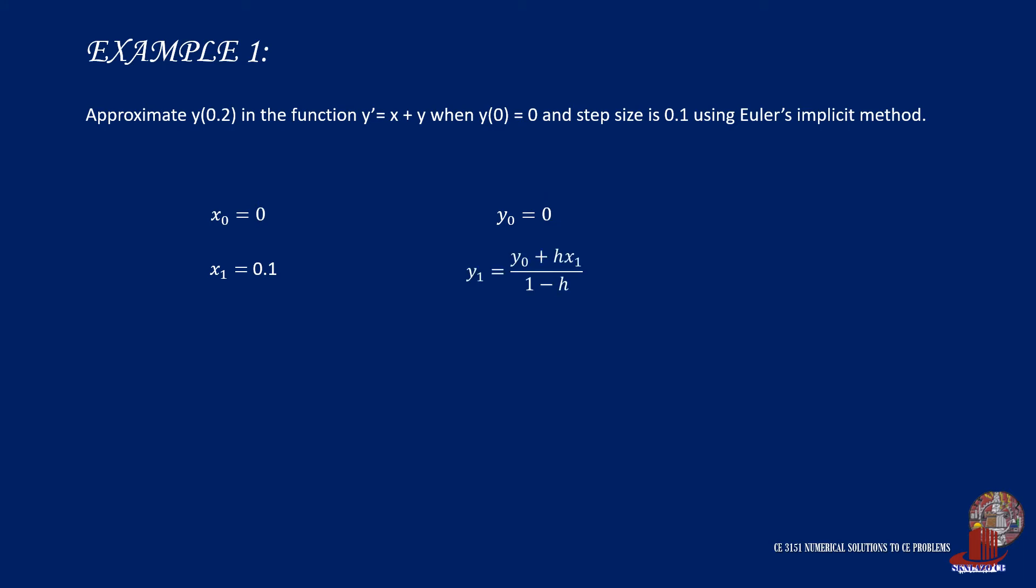y1, on the other hand, has a particular solution derived earlier, so plug y0 as 0 plus h of 0.1, multiplied by x1, which is 0.1, and everything will be divided by 1 minus h, which is 0.9. And y1 comes out to be 0.01111.